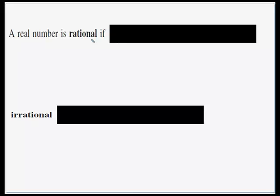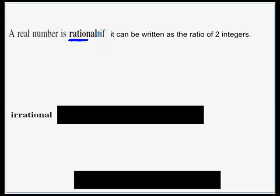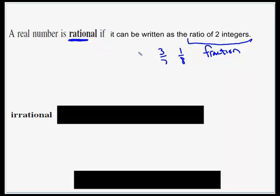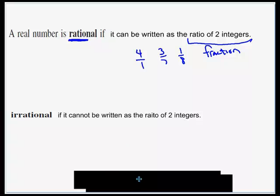One thing we've got to figure out is the difference between a rational and an irrational number. When is a number rational? Look at the first few letters: we have 'ratio.' A ratio is a comparison of two numbers — a lot of times we write ratios as fractions. So a real number is rational if you can write it as the ratio of two integers, which is just a fraction. Numbers like 3 sevenths, 1 eighth, or even the whole number 4 written as 4 over 1 are all rational numbers. A number is irrational if it cannot be written as the ratio of two integers.